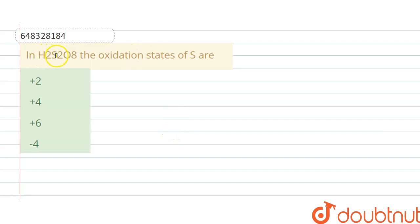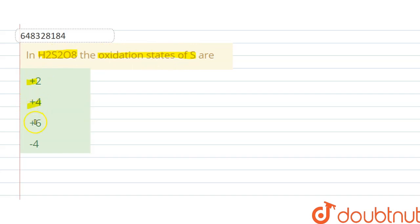Hello students. The question is: in H₂S₂O₈, find the oxidation state of sulfur. The options are plus 2, plus 4, plus 6, and minus 4. Let's find the answer.